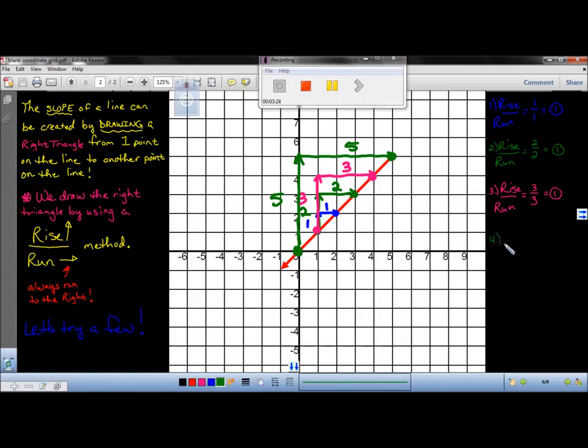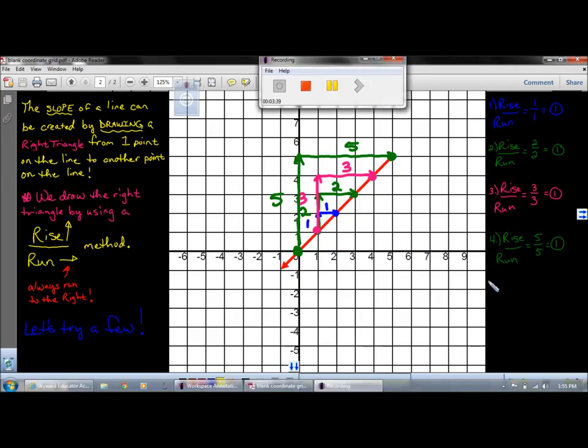Same thing, same method. We're going to apply our rise over run. We went up 5 and ran 5. 5 over 5. That's the same as 1 over 1, or anything over that same value. If the denominator and the numerator are the same, it's 1.